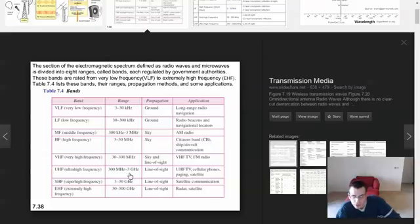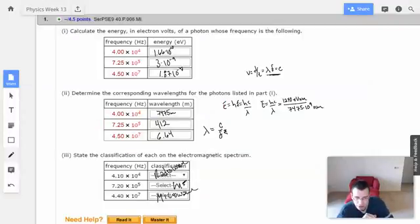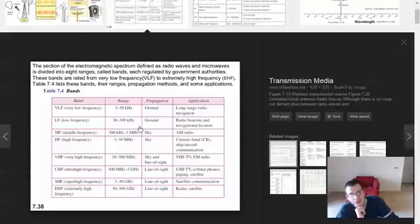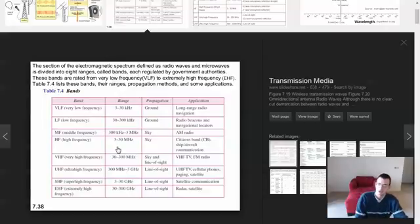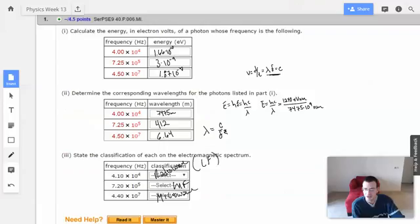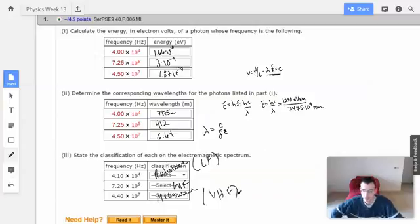So we got 7 times 10 to the 5th. So 7 times 10 to the 5th is like 70 kilohertz or 700 kilohertz. I'll say 700 kilohertz. So I'll say middle frequency. So middle frequency. 4 times 10 to the 4th, so probably this guy. So it'll be LF, so radio waves, specifically low frequency. And 10 to the 7th is like 10 megahertz. So I'm going to say VHF.